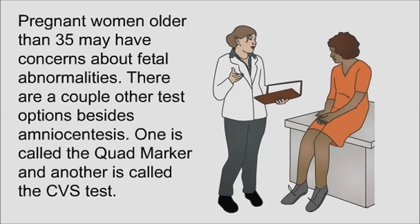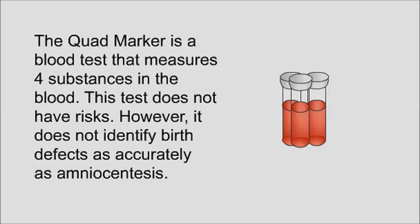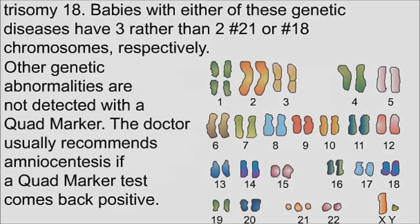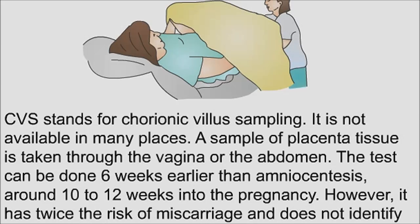Pregnant women older than 35 may have concerns about fetal abnormalities and have other test options. One is called the quad marker — a blood test that measures four substances in the blood. This test has no risks, but does not identify birth defects as accurately as amniocentesis. It is good at checking for trisomy 21 and trisomy 18, where babies have three rather than two number 21 or number 18 chromosomes. Other genetic abnormalities are not detected with the quad marker, and doctors usually recommend amniocentesis if a quad marker test comes back positive.